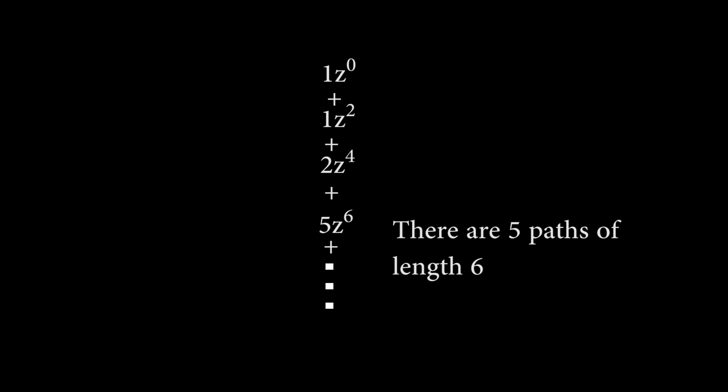So, in this single series, we have encoded how many paths there are of any length. Notice that all the exponents are even, since any odd length could not possibly end on the floor, and so wouldn't meet our constraints.